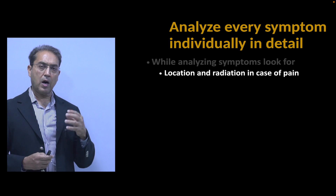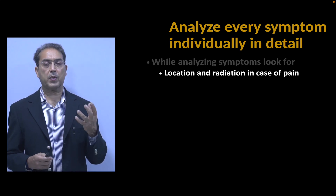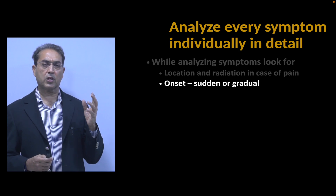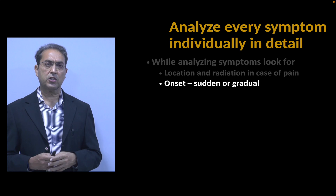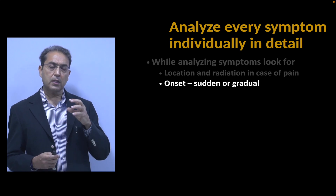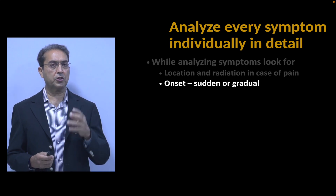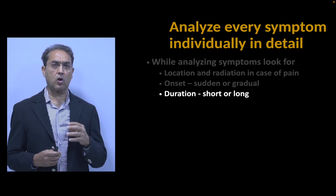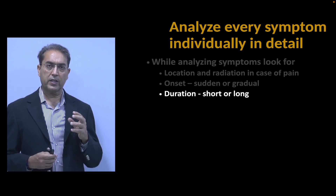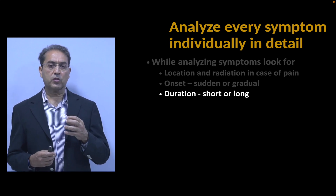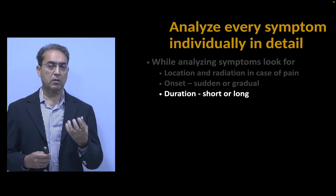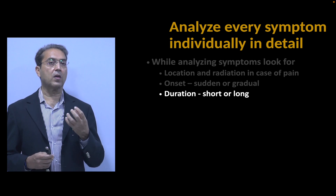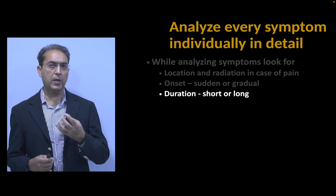Look at the onset of the symptom — is it sudden or gradual? For example, a very sudden onset headache may suggest subarachnoid hemorrhage, while a chronic fluctuating headache may indicate tension headache. Duration is also important: symptoms that are very long-standing are generally less likely to be due to something drastic, while recent-onset symptoms require more careful attention — though exceptions exist, such as chronic diarrhea which may indicate serious underlying disease.